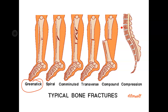The next type is the spiral break, which is caused by a twisting motion — that's where it gets its name. Think of taking something with both hands and twisting each hand a different way, or a twist during baseball or golf where the bone snaps. That would be a spiral break.